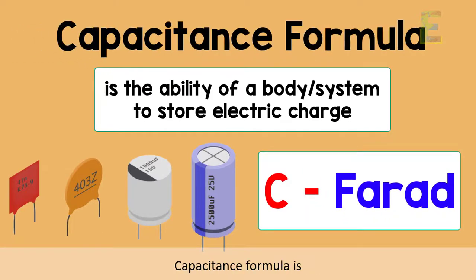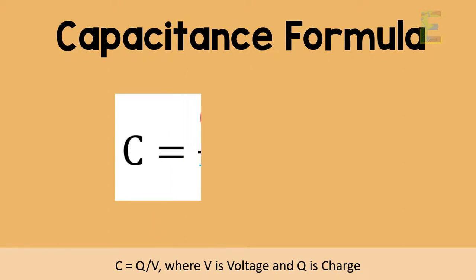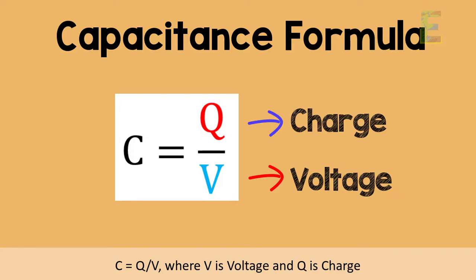Capacitance formula is C equals Q over V, where V is voltage and Q is charge. In other words, capacitance is what we can get when we divide the amount of charge stored by the voltage.